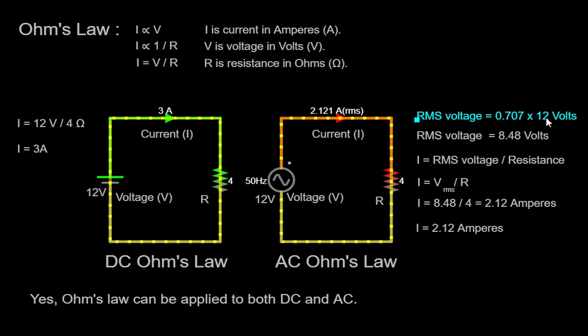In our AC circuit, we have a 12 volt AC voltage source and the same 4 ohm resistor. To apply Ohm's law in the AC circuit, we need to use the RMS values. Therefore, the RMS voltage can be calculated as follows: RMS voltage = 0.707 × 12 volts = 8.48 volts.